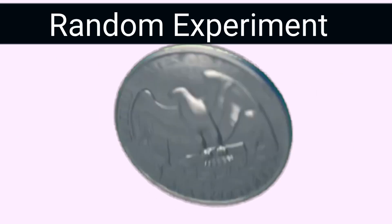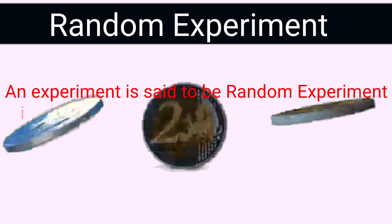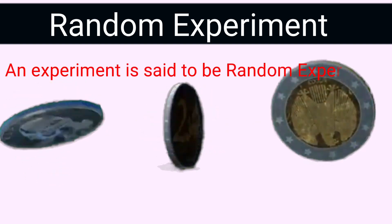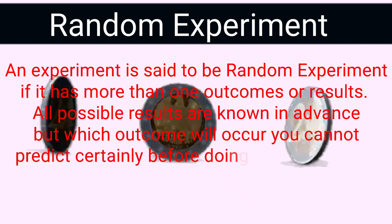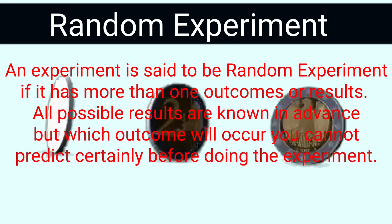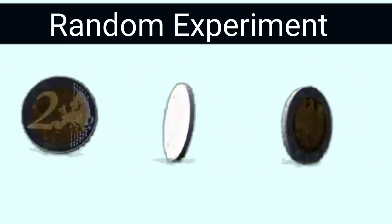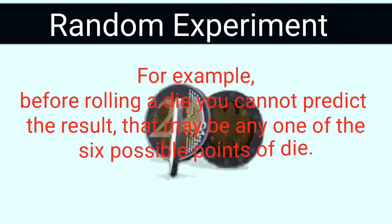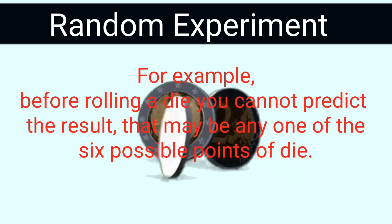What is a random experiment? An experiment is said to be random if it has more than one outcome or result. All possible results are known in advance, but which outcome will occur you cannot predict with certainty. For example, before rolling a die you cannot predict the result — it may be any one of the six points.